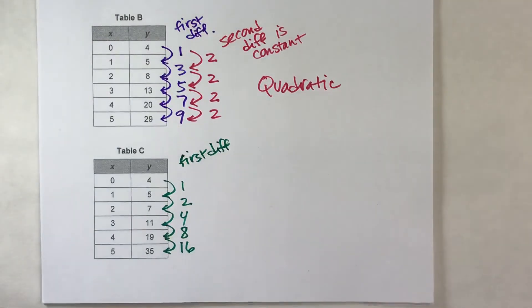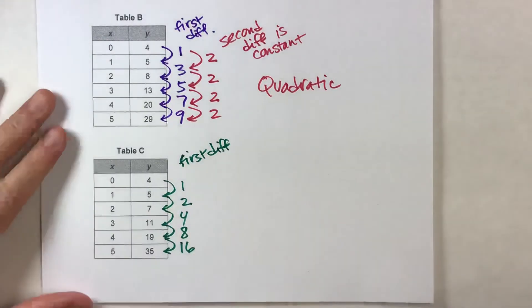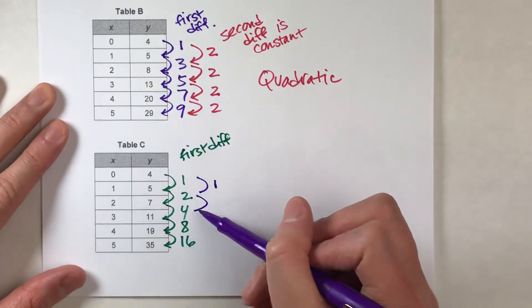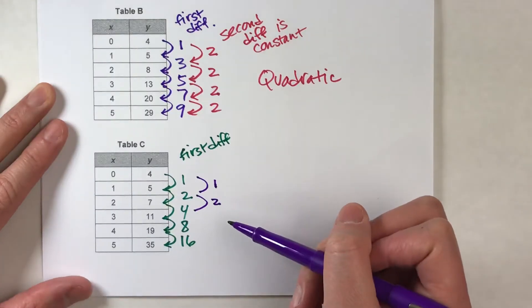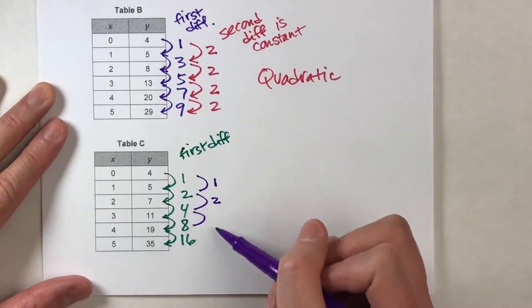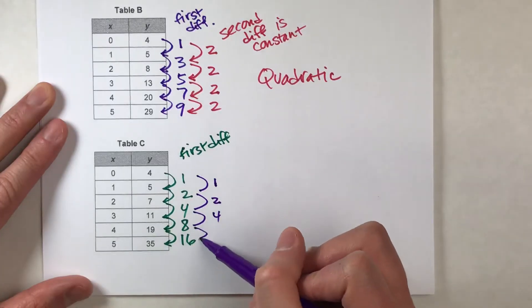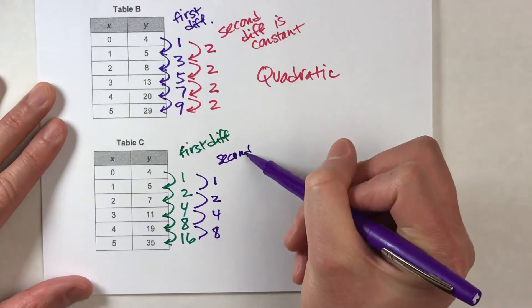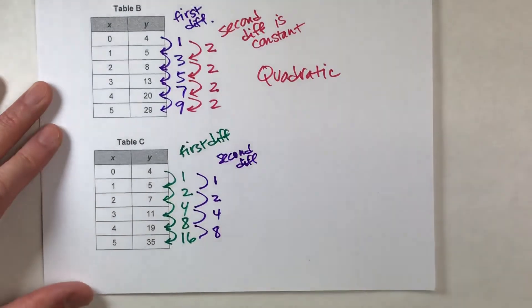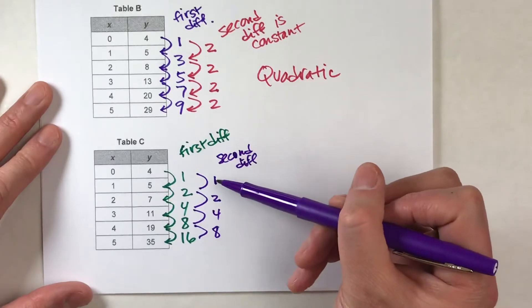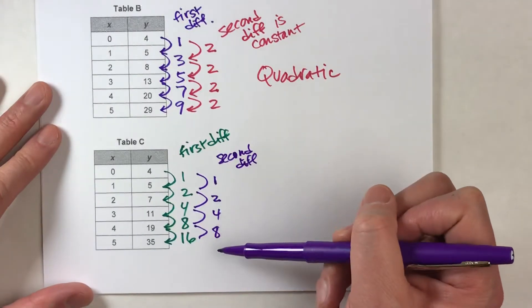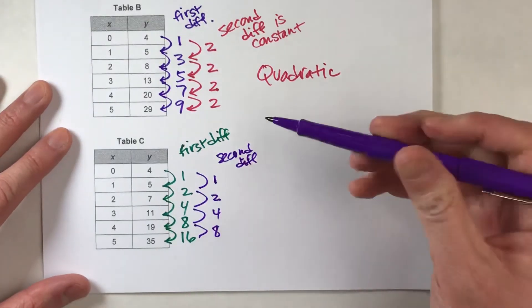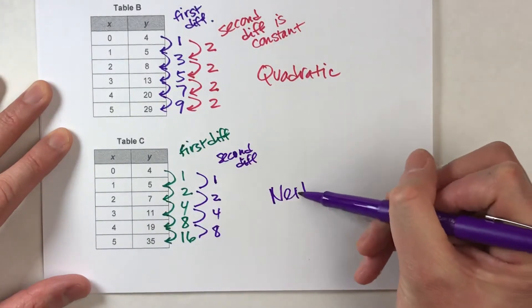So now, let's see what the second difference is. From 1 to 2, it's going up 1. From 2 to 4, it's going up 2. From 4 to 8, it's going up 4. From 8 to 16, it's going up 8. So that's our second difference. Now notice, our second difference is also changing. So this is not a quadratic either. This is neither.